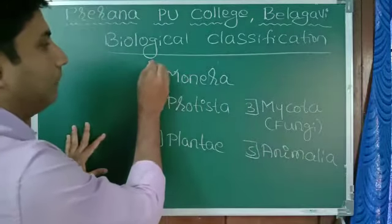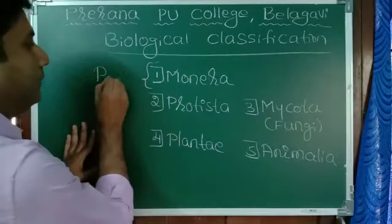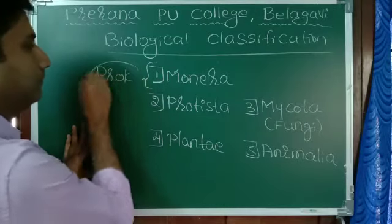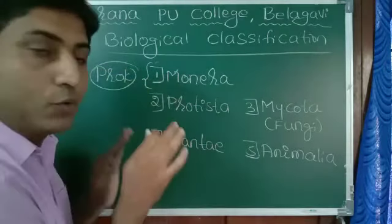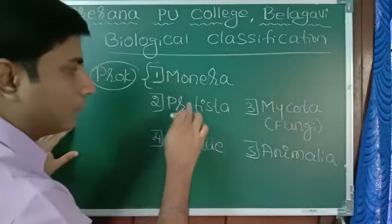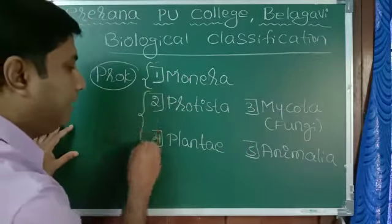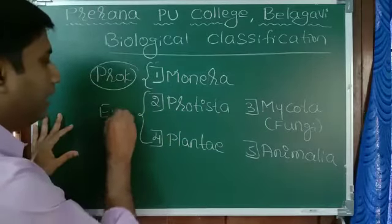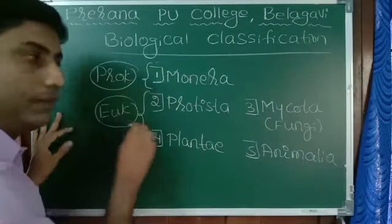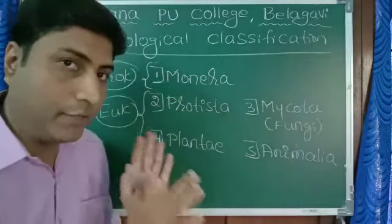Prokaryotes are the organism with least developed nucleus. And eukaryotes are the organism with true nucleus. Now out of this five, only Monera is prokaryote. Only Monera is prokaryote. Remaining four - Protista, Mycota, Plantae, Animalia - are eukaryotes.